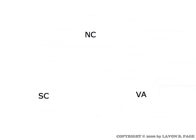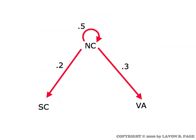We're going to draw a picture which includes all that data in a visual format. The first thing I'm doing is locating the three states in the picture: North Carolina, South Carolina, and Virginia. Now I'm going to fill in the information with regard to the trucks rented from North Carolina locations. 50% of them are returned to North Carolina, 20% to South Carolina, and 30% to Virginia. You can think of these as probabilities — a .5 probability returned to North Carolina, a .2 probability returned to South Carolina, and a .3 probability returned to Virginia.